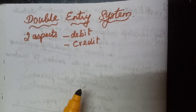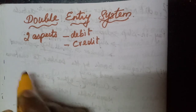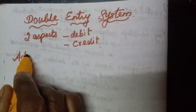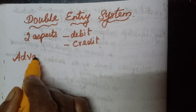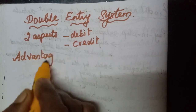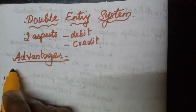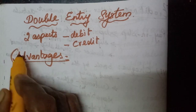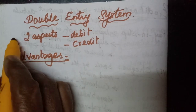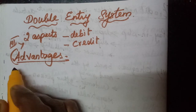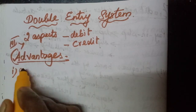Now we will learn the advantages of the double entry system. We have studied the principles; now we will see the advantages. It is one of the seventh question in Roman numeral 3, so you have to learn this soon. The first advantage is accuracy.